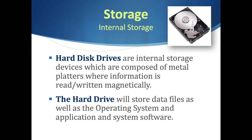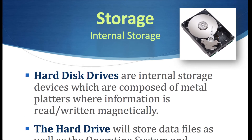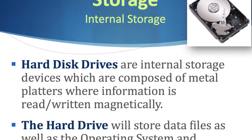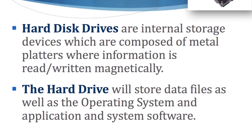Computers typically come with internal storage — some type of hard disk or hard drive where your operating system, system software, applications, and all your data are stored. Traditional hard drives, like the one pictured above, are typically sealed metal containers that contain spinning metal platters where bits of information are stored magnetically. These types of drives are very reliable and can hold a lot of data, but they can break down because they do have moving parts.